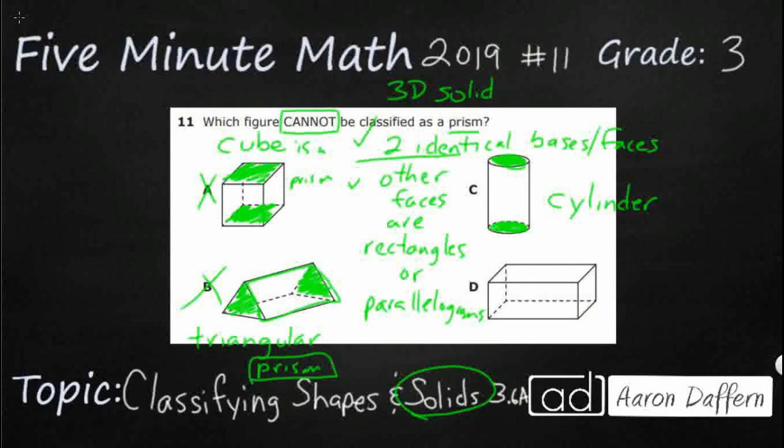But here's the problem. All other faces need to be rectangles or parallelograms. We can't even call this middle part right here a face, it's a curved surface. So we are going to run into a problem because the cylinder does not have rectangles or parallelograms as the rest of its faces. It's got a curved surface.